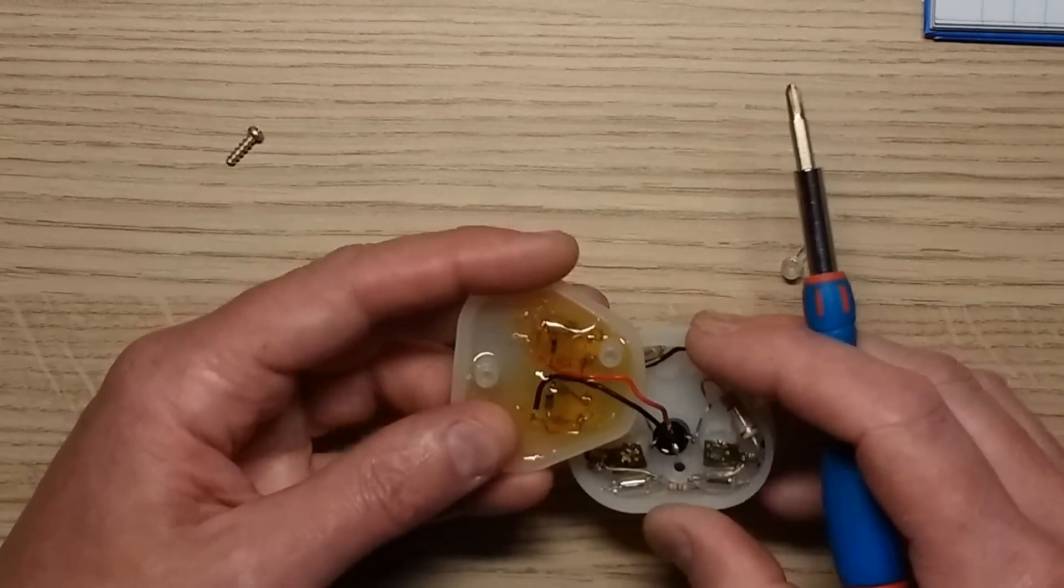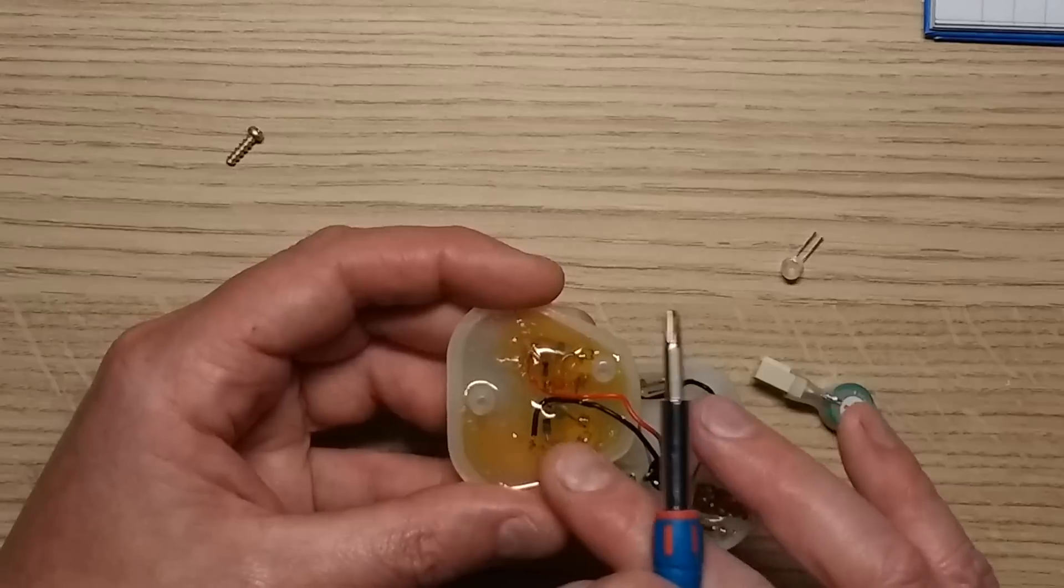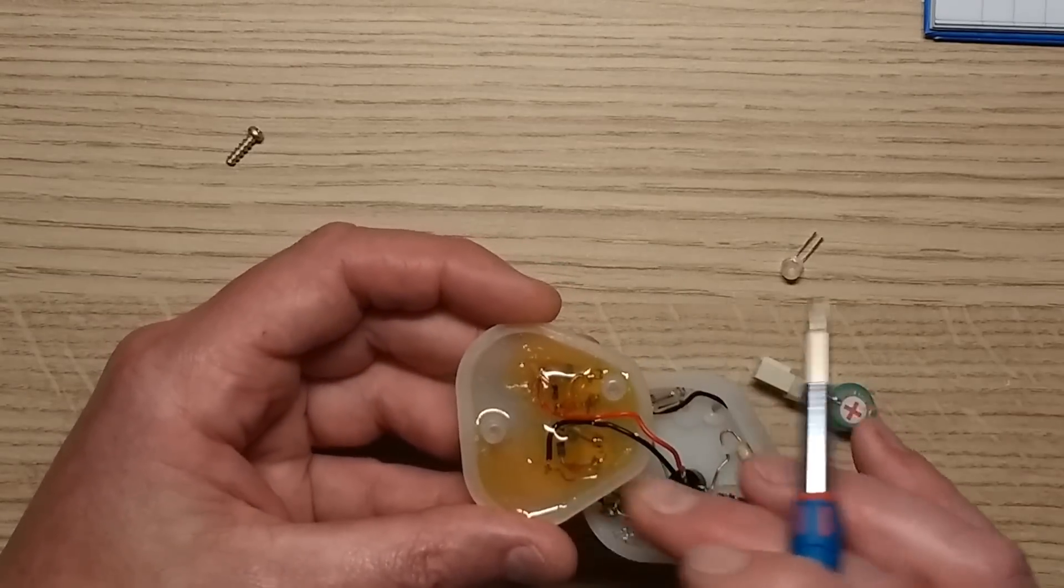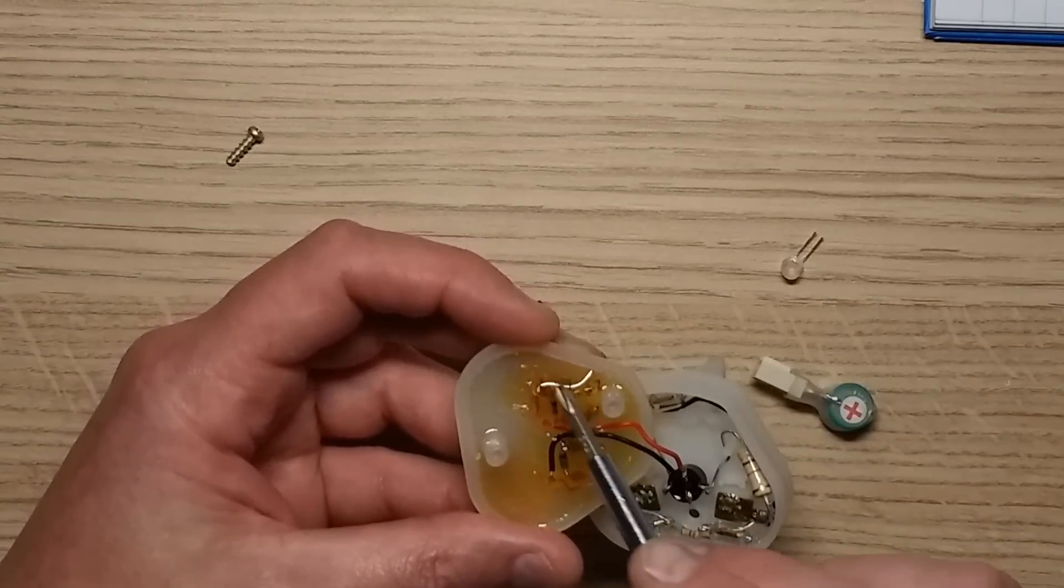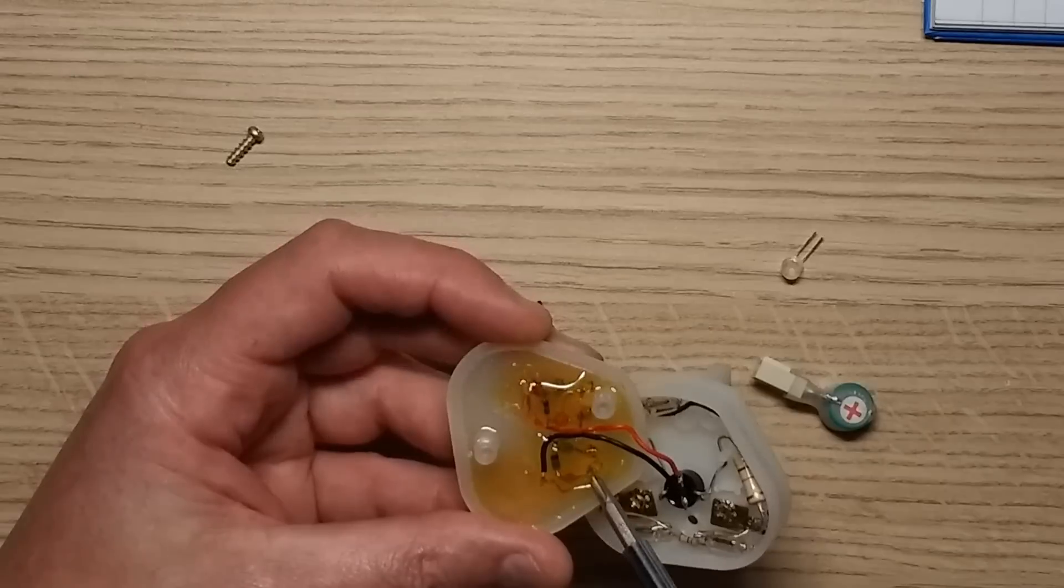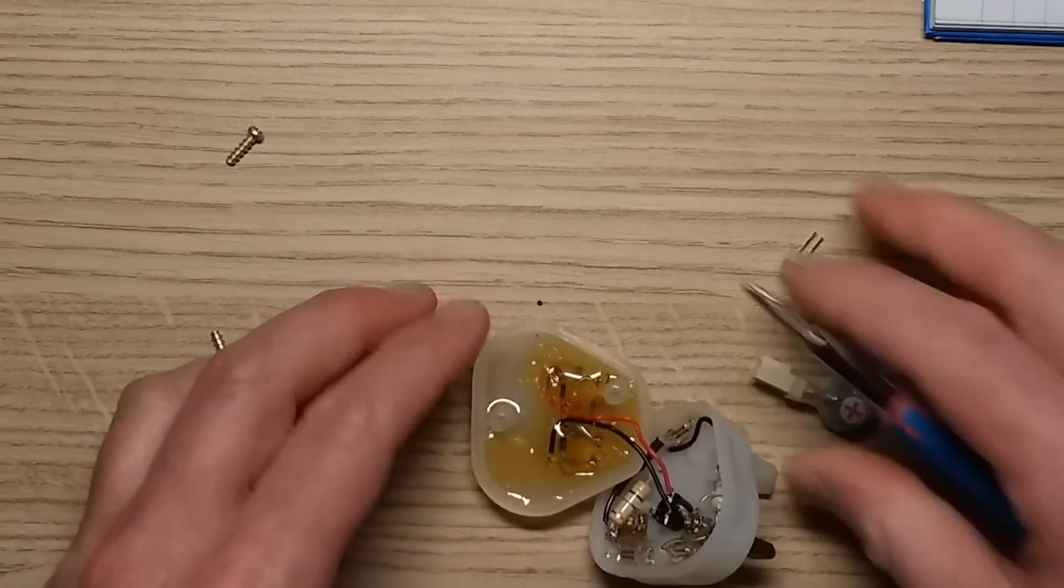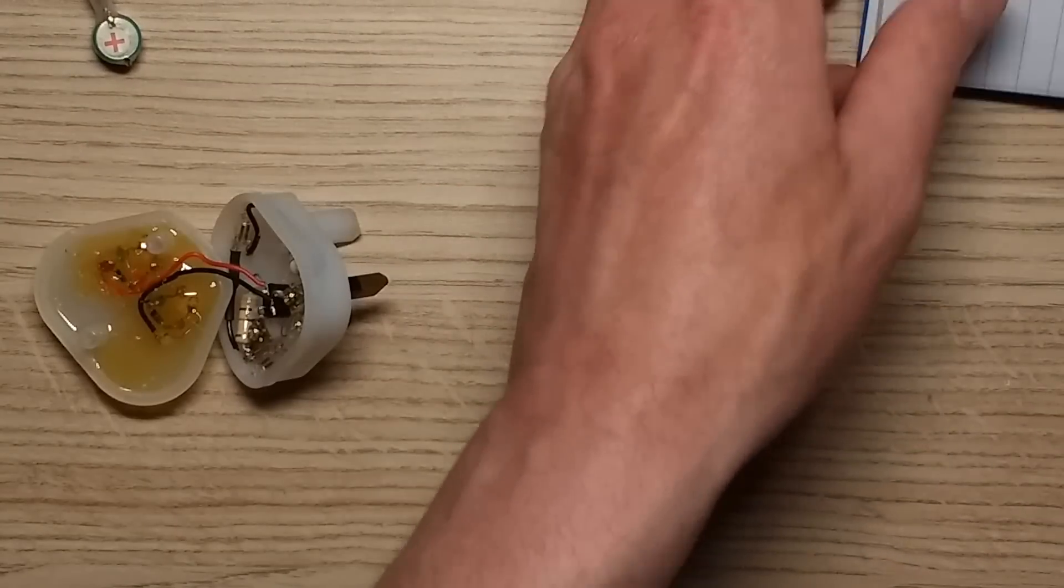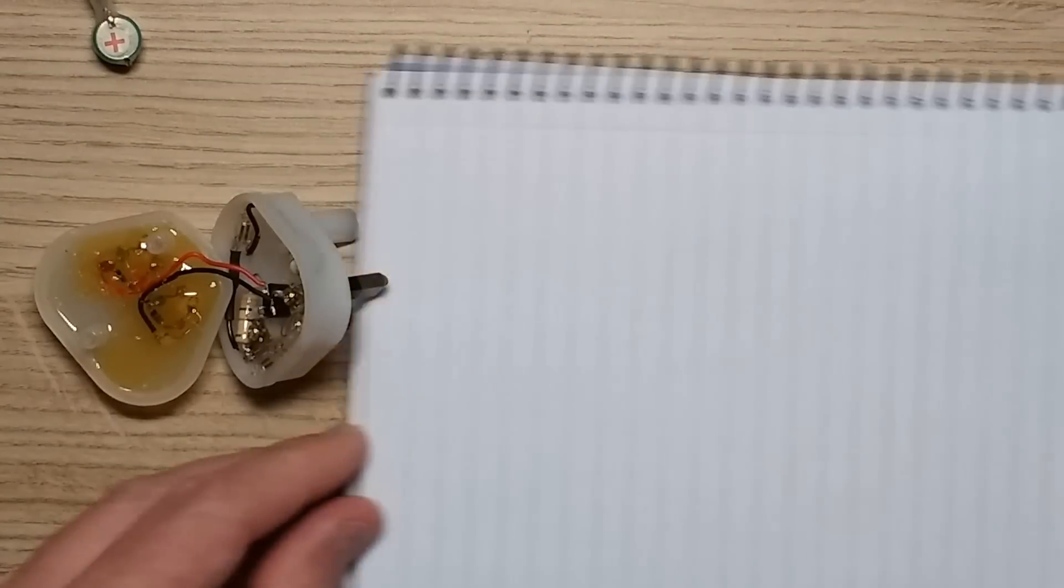The circuitry is all potted under resin completely in here, just basically two part resin that has then been gunked in. Let's draw this out, let's bring the notepad in and doodle and see what abomination I created.